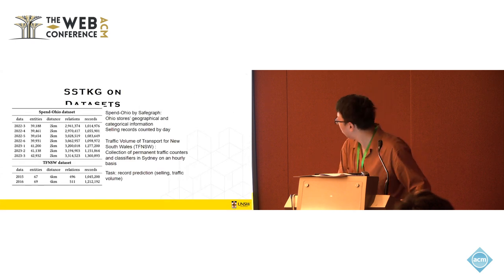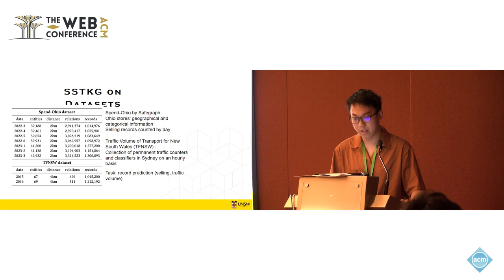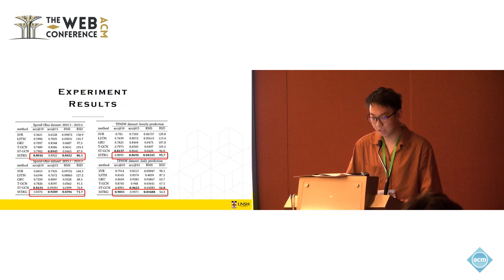We see some experiments. SSTKG is applied on the following datasets. First one is SafeGraph Ohio, which contains Ohio stores' geographical and categorical information. And it contains the selling records they counted by day. And the second one is the traffic volume of Transport for New South Wales, which is the TPNSW dataset. It's a collection of permanent traffic counters and classifiers in Sydney. It's counted on hourly basis. Our task is regular prediction of selling and traffic volume.